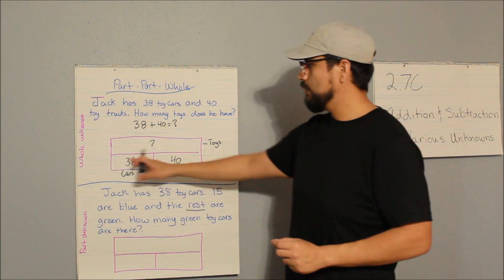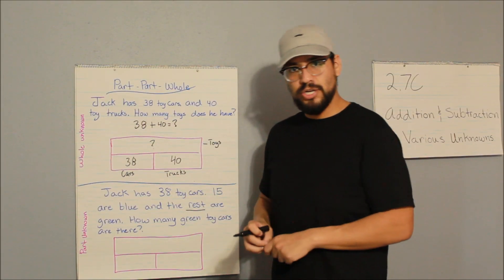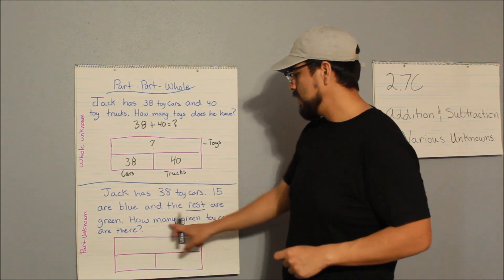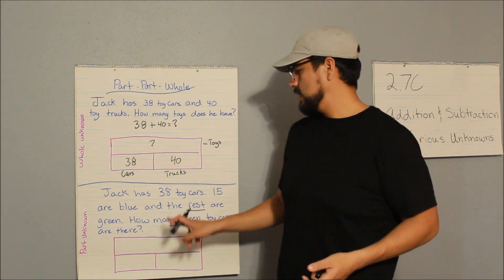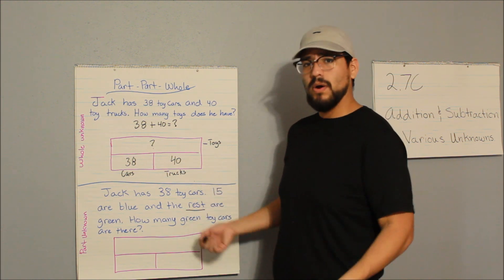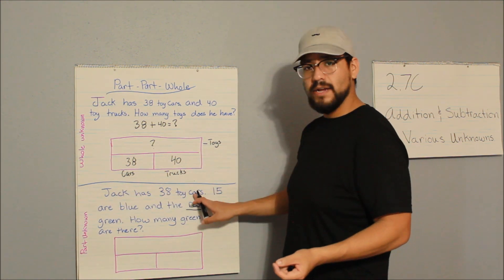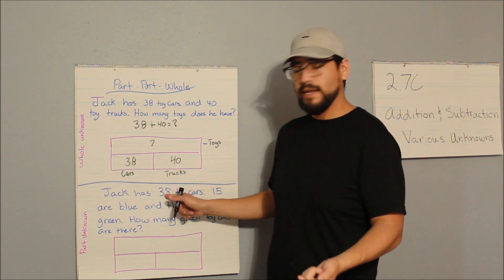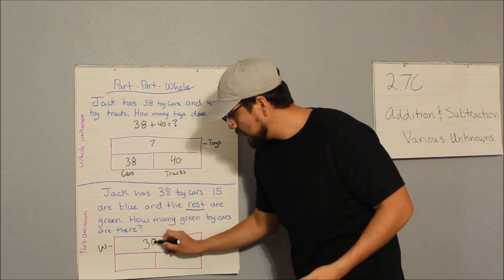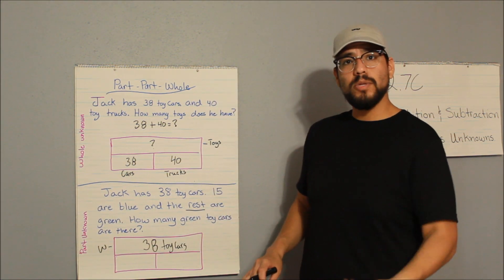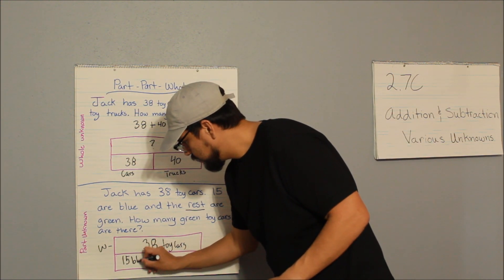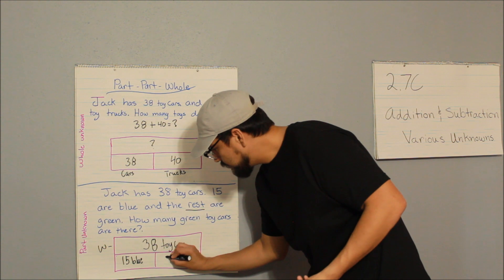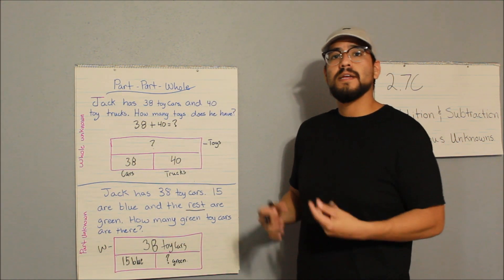Now let's look at our second problem — this time we're going to look for a part that's unknown. I had both parts given to me before and my whole was unknown. Now see what a part unknown looks like. Jack has 38 toy cars; 15 are blue and the rest are green. How many green toy cars are there? We don't know that part, but we know he has 38 cars and 15 are blue. So my whole is 38, one part is 15 blue, and the rest — question mark — are green.